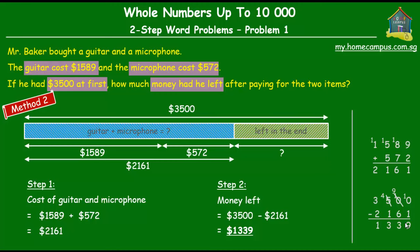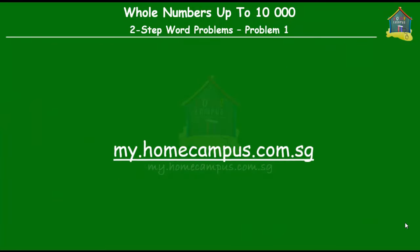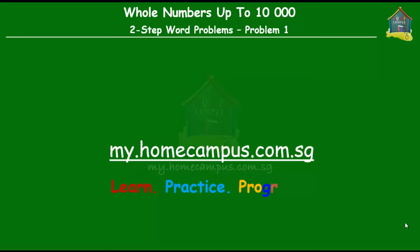We saw two methods of solving this problem and both gave the same answer of $1339. It really depends on you which method you prefer. That brings us to the end of this lesson. For more word problems and other questions, check out my.homecampus.com.sg. This is Em signing off — bye!